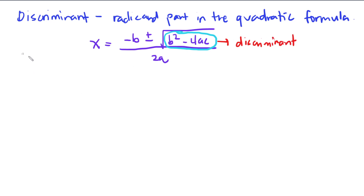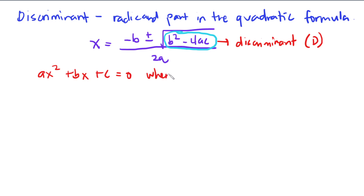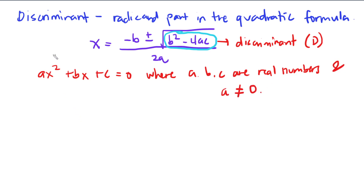We denote the discriminant by D, capital D. Now, how are we going to use this discriminant to characterize the roots of the equation? We have the standard form of the quadratic equation: ax squared plus bx plus c equals zero, where a, b, and c are real numbers and a must not be equal to zero.